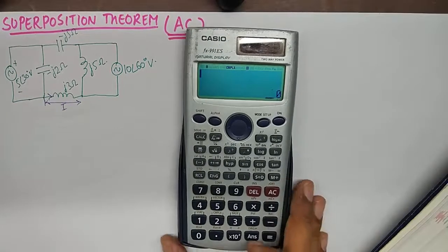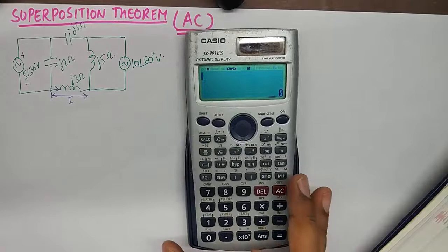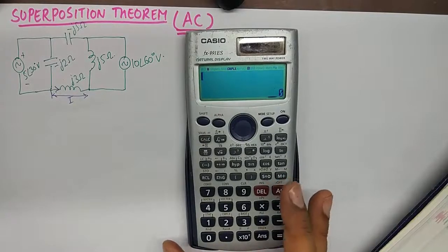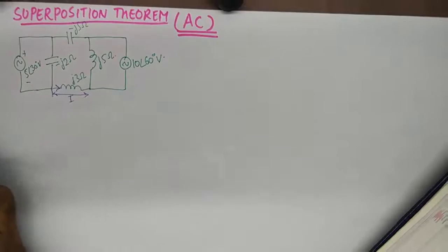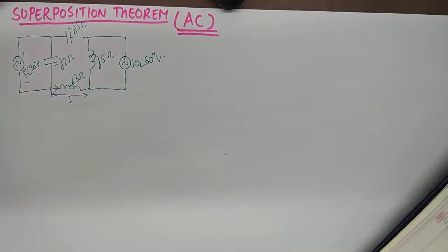But in case you have not seen those videos I'll give you a brief introduction as to how you can use it in this one also. So first things first, in Superposition Theorem we calculate current in the specific branch by keeping one source at a time. And then we find the current in the branch courtesy one source, courtesy second source. And then we finally add those currents or subtract them depending upon their direction. So that would be an algebraic sum.